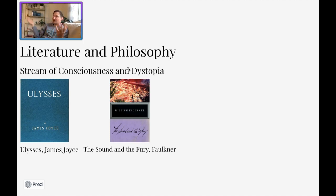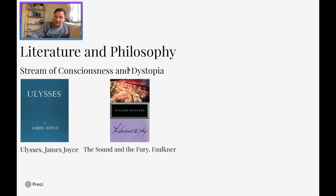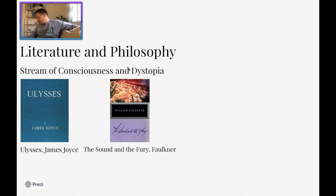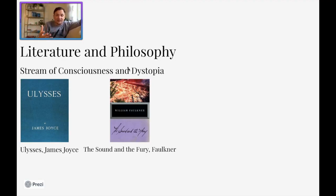So the stream of consciousness technique is this idea of adopting just the narrator's stream of constant thoughts. In Ulysses by James Joyce, it's all about an Irishman on his way home from a bar in the middle of the night, and it actually mirrors the journey that Odysseus went on in the Odyssey. The Sound and the Fury by Faulkner is a very famous stream of consciousness piece, and in moments in the novel you're actually seeing the perception of reality through the eyes of someone with autism, as well as other different characters.